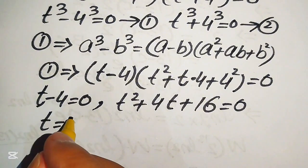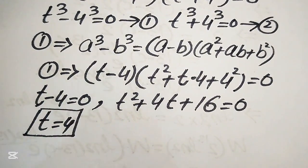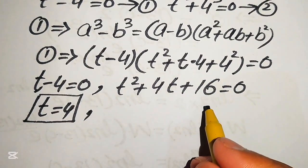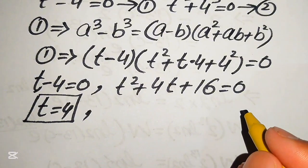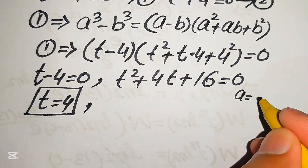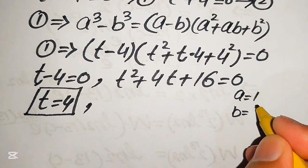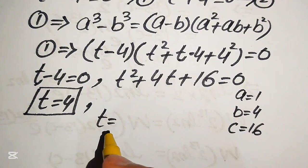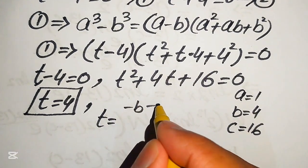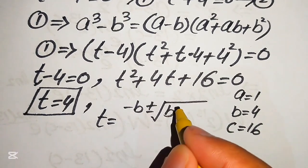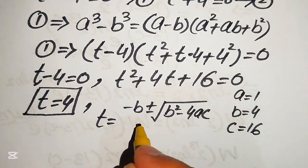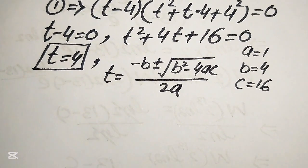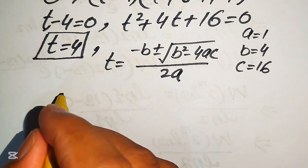From the first case we easily get t equals 4, which is the first real solution. To find the other solutions we solve the quadratic equation t² + 4t + 16 = 0 using the quadratic formula. The coefficients are a equals 1, b equals 4, and c equals 16. The quadratic formula is t equals (−b ± √(b² − 4ac)) / (2a).